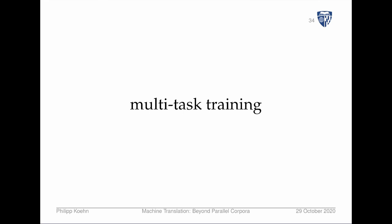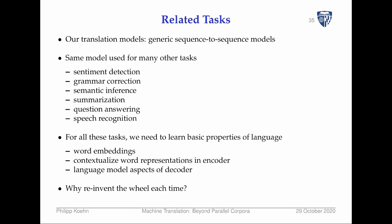The final topic is multitask training — taking an even further departure from parallel data by using completely different data that might be useful for training general NLP models, and therefore machine translation. Translation models are generic sequence-to-sequence models, and many NLP methods use variants of such models — often adopted from pioneering machine translation research. The same model architecture is used for sentiment detection, grammar correction, semantic inference, summarization, question answering, and speech recognition.